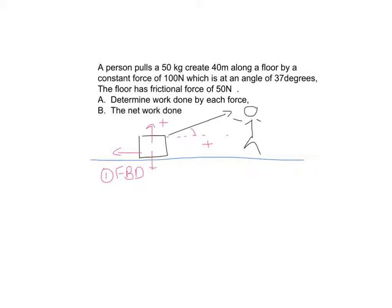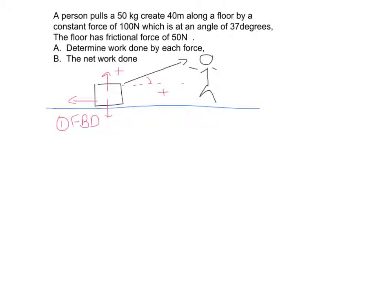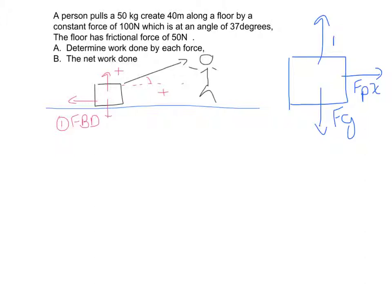Let's make an FBD of the box. We've got the force of the pull in the x-direction, the force of gravity, the normal force, and the force of friction. I'm going to make a note that the force of the pull is the adjacent component, so that's cosine of 37 degrees.